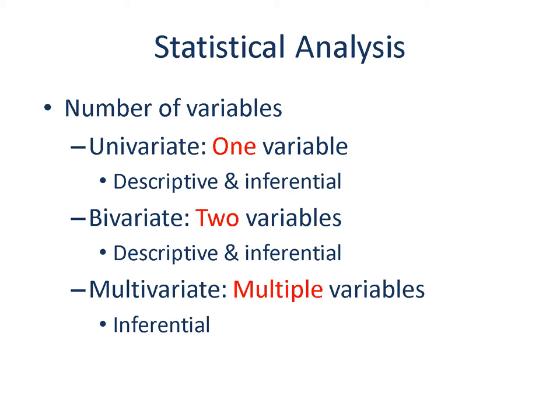Let's assume that your research question is to explain the association between students' participation in a professional development program and job attainment at ASU's higher education master's program. Then you have two variables: student participation and job attainment. You will employ one of the bivariate statistics to answer your research question, and we will explore more of these details soon.